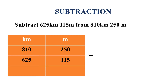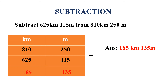0 minus 5 is not possible, so we borrow 1 from the previous place to get 10. 10 minus 5 is equal to 5. 4 minus 1 is equal to 3. 2 minus 1 is equal to 1. So we get 135 under the meters side. Moving to kilometers: 0 minus 5 is not possible, so we borrow to get 10. 10 minus 5 is equal to 5. Then 0 minus 2 is not possible again, so we borrow from 8 to get 10. 10 minus 2 is equal to 8. 7 minus 6 is equal to 1, giving 185 under kilometers. The answer is 185 kilometers 135 meters.